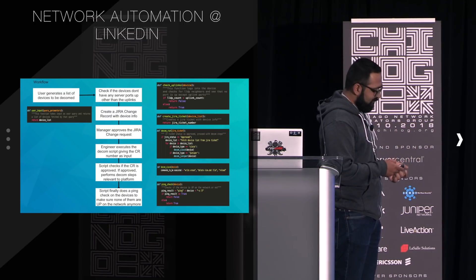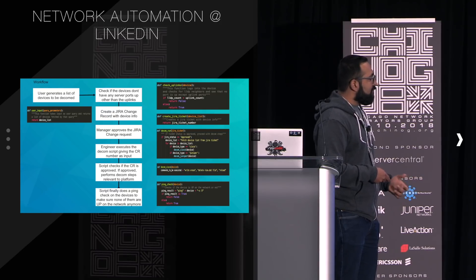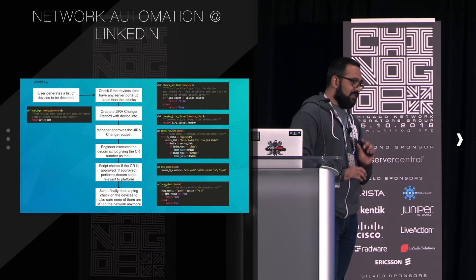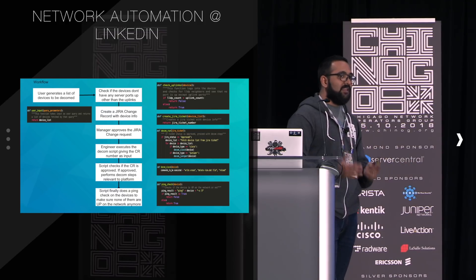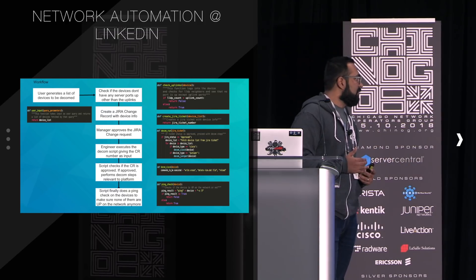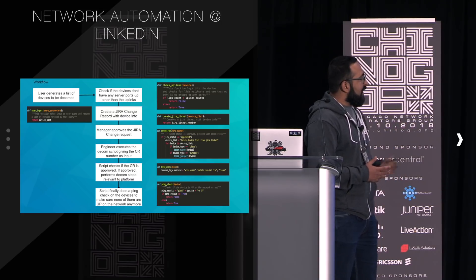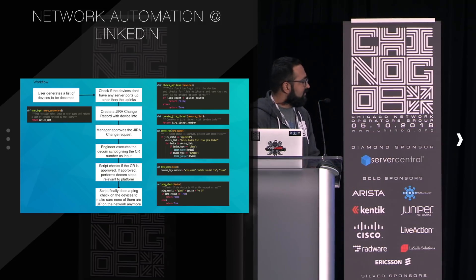For each separate platform, the appropriate function is called — Juniper is wiped separately, Nexus separately. The process does write erase, delete VLAN file, and reload. After that, the engineer runs a ping check to verify successful decommissioning. If the ping fails, the device has been decommissioned successfully. This complete workflow enabled us to decommission two full-scale data centers in a very short time.